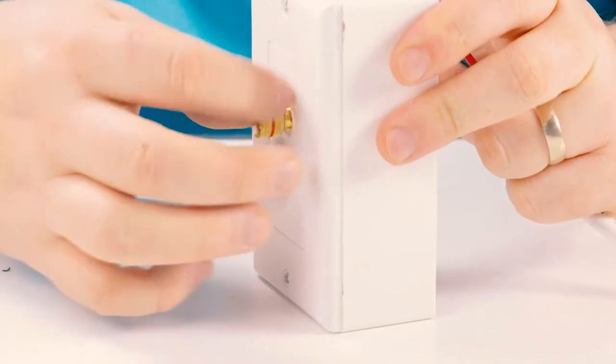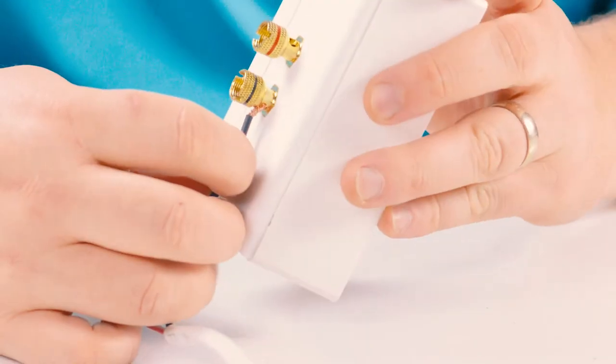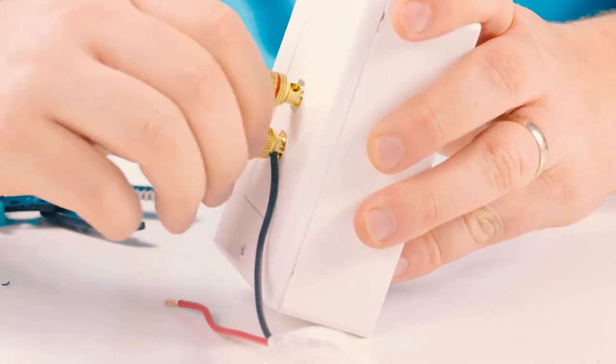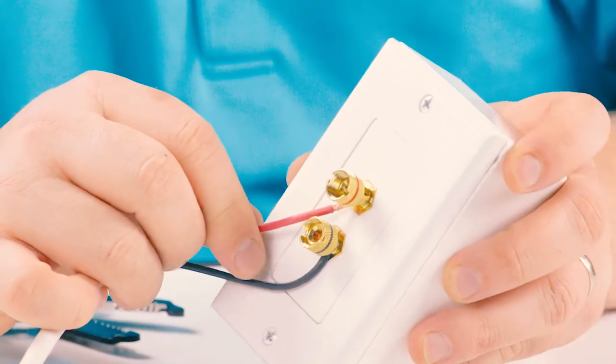The binding post can be used with bare cable by inserting the speaker wire into the small opening beneath the head and then screwing it back down.